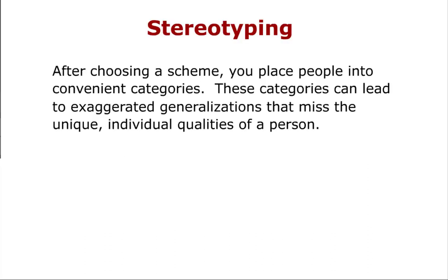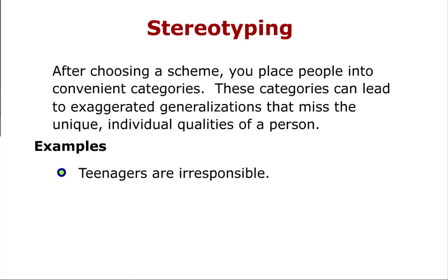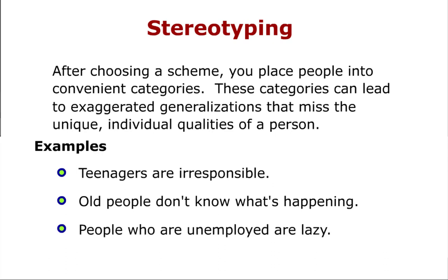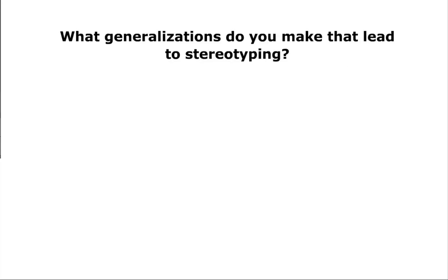Stereotyping: After choosing a scheme, you place people into convenient categories. These categories can lead to exaggerated generalizations that miss the unique, individual qualities of a person. Examples include: teenagers are irresponsible; old people don't know what's happening; people who are unemployed are lazy. What generalizations do you make that lead to stereotyping?